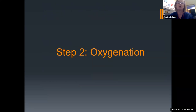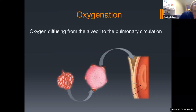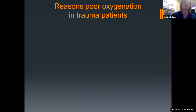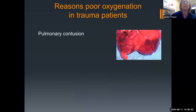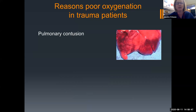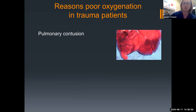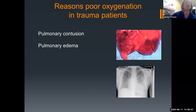Step two in making sure our patients get enough oxygen to keep those cells alive is oxygenation — really the diffusion of oxygen going from the lung into the pulmonary circuit. There are reasons our trauma patients are not oxygenating very well. The first is pulmonary contusions, especially in the pediatric arena. You can see on this lung all those boggy areas — those are places where we have contusions. With the bruising of the lung, it's going to be hard for the oxygen to escape the alveoli and get into the pulmonary circuit, affecting our oxygenation.